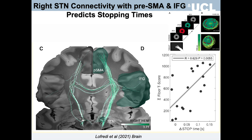A recent study by Lofredi from the Berlin group showed that right STN connectivity with the pre-SMA and the inferior frontal gyrus predicts stopping times. Patients with Parkinson's disease performed visually cued initiation and termination of continuous rotational movements with STN DBS on or off. Subthalamic stimulation significantly increased stop times, and this increase correlated with the connectivity of the subthalamic nucleus to the pre-supplementary motor area and the inferior frontal gyrus of the right hemisphere, consistent with the imaging findings of Aaron and colleagues.